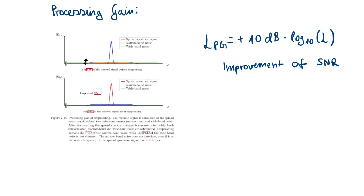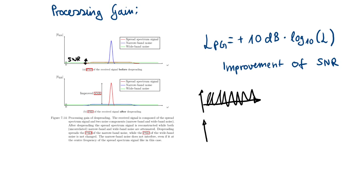Before de-spreading, the signal-to-noise ratio was quite low — we had a noise-like signal — and if we take that spread spectrum signal we probably cannot decode it. In the time domain it can look like noise. But after applying de-spreading, you have a very clean signal, maybe a bit affected by noise, but now you can clearly see the symbols and you can decode them.